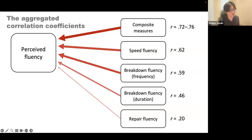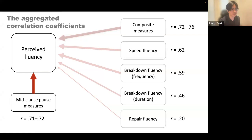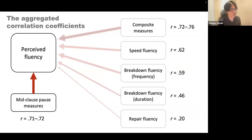Taken together, all three dimensions of fluency contribute to human-based fluency judgments in a meaningful manner, but to a different degree depending on the dimension. We are particularly interested in the theoretical assumption that formulation processes in speech production are mostly related to pausing behavior in the middle of clauses, measurable by mid-clause pause duration and frequency. Our ad hoc analysis found that mid-clause pause measures are associated with fluency ratings as strongly as composite measures — a surprising finding. You cannot ignore where students stop while speaking in a second language in the context of fluency assessment.